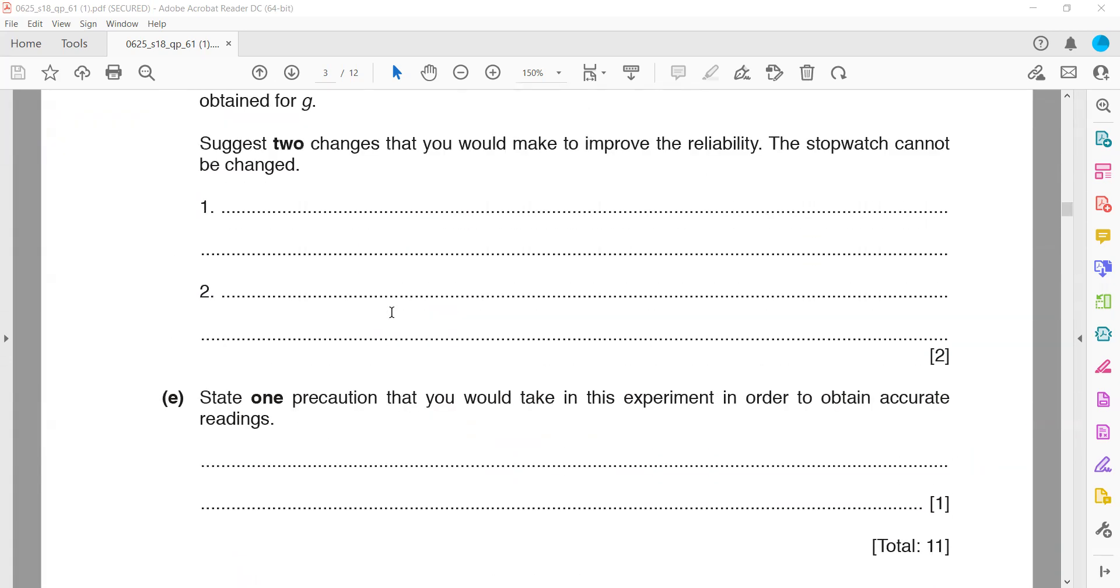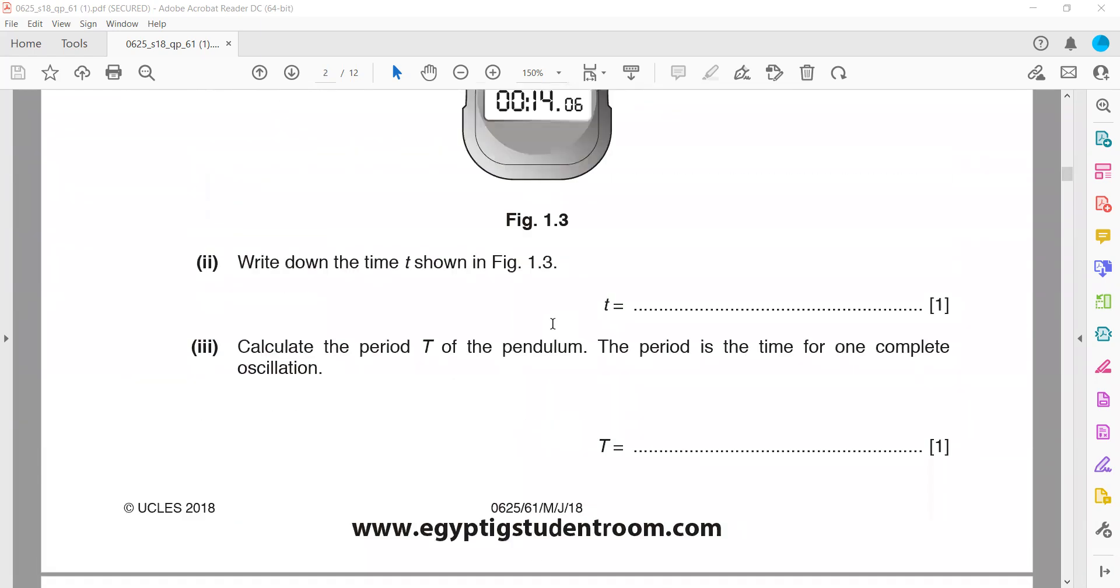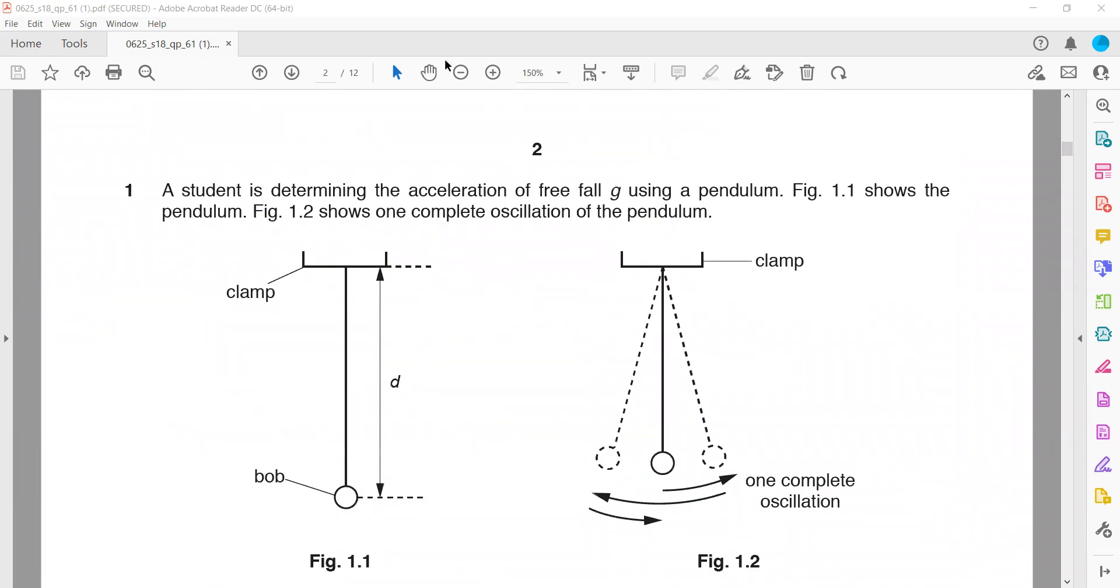State one precaution you would take in this experiment to obtain accurate readings. We are reading the scale using a meter rule, so when measuring, we should look perpendicular to avoid parallax error in measurement of the distance.